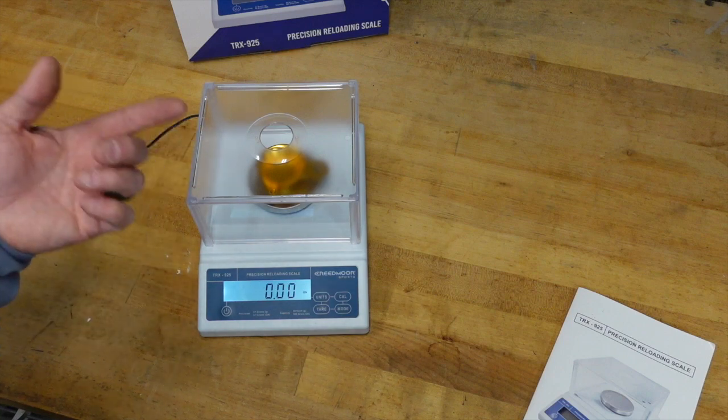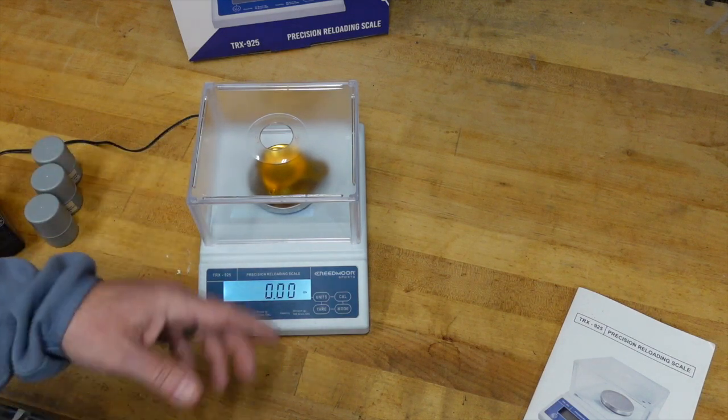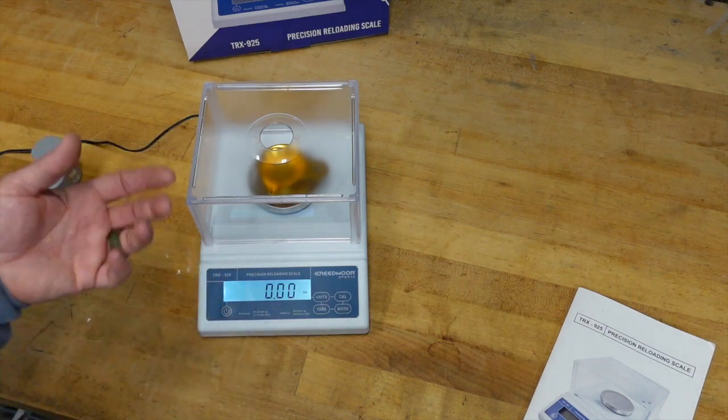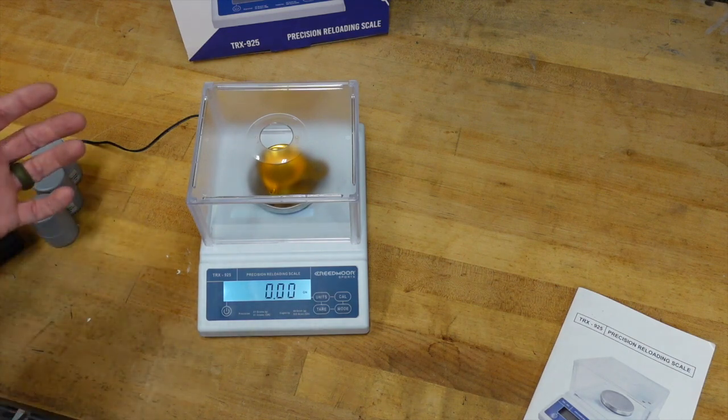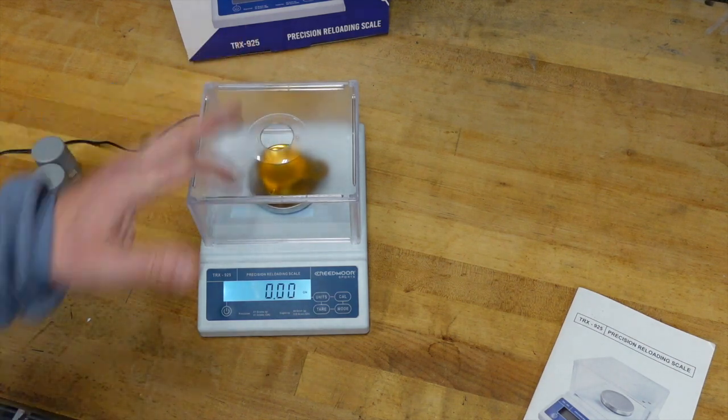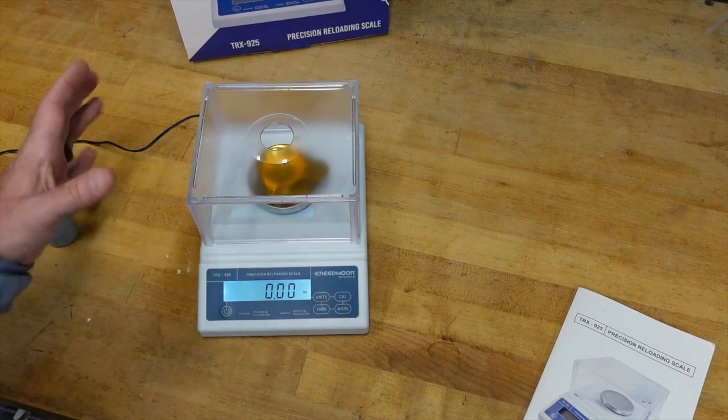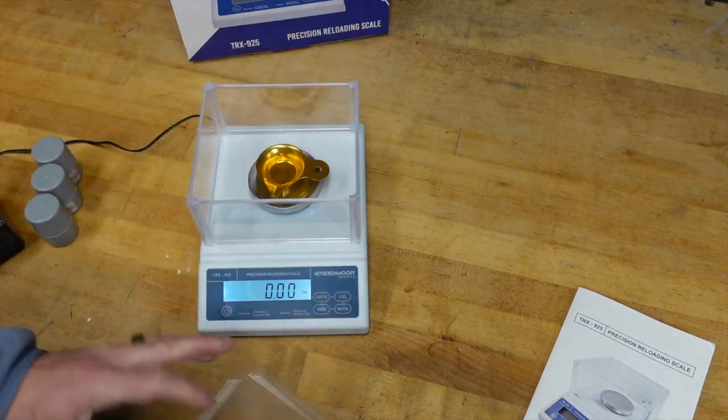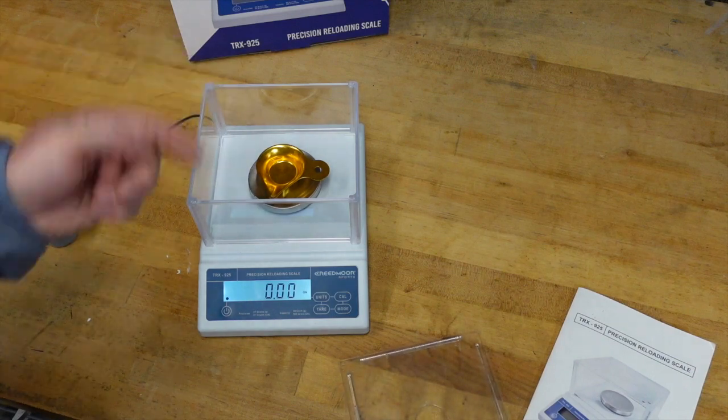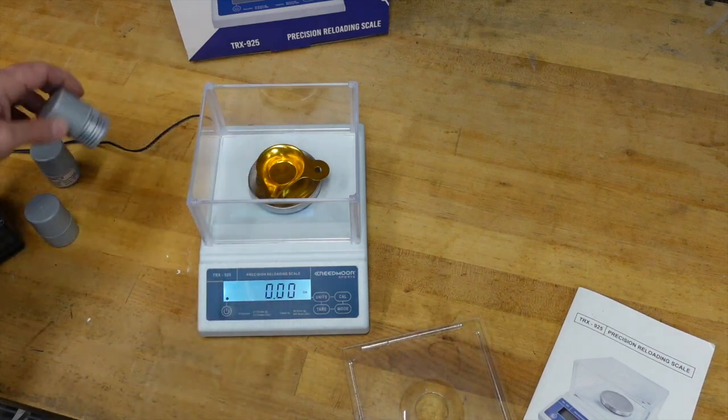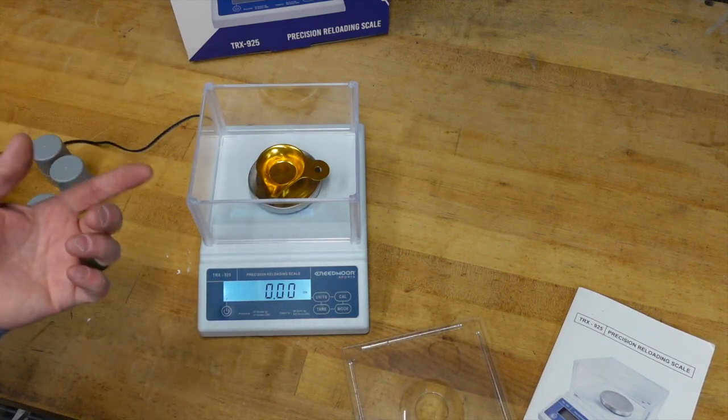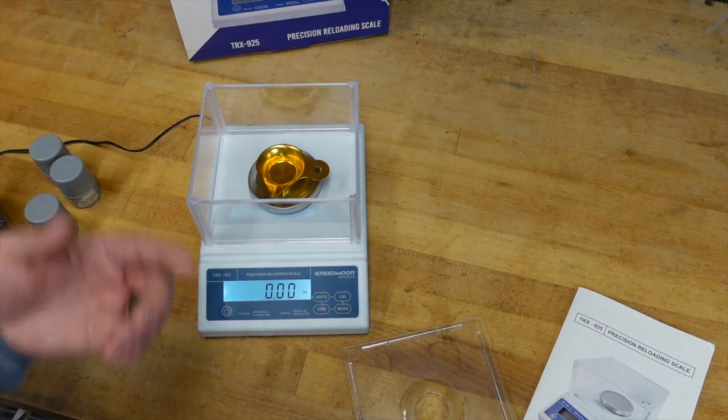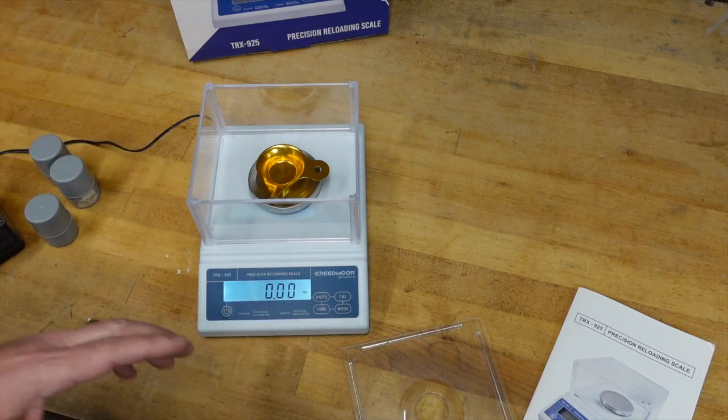Now there is some theory that because it uses an auto zero system that it's constantly correcting inside. And I suppose there is some truth to that, but the point being is that there was no visible drift on the scale after a week. Now I also went ahead and zeroed it and then put a weight in it. I used the 10 gram if I remember right. And I left that sit for a week. Again, I came back after a week and it was 10 grams.